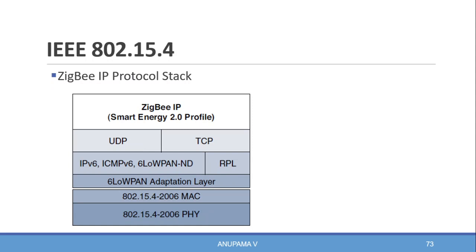Let us look into the protocol stack of ZigBee IP. ZigBee IP is built upon IEEE 802.15.4 PHY and MAC layers. Above that we find the 6LoWPAN adaptation layer, followed by IPv6, ICMPv6, 6LoWPAN ND, and RPL. Then we find UDP and TCP layers, upon which ZigBee IP is utilized, mostly in the smart energy profile.